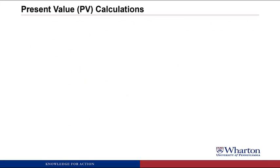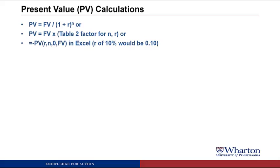Now let's practice doing calculations with this present value formula three ways. First, you can plug numbers into the formula in your calculator. Second, there's a new table — Table 2 — where we can pull factors for number of periods and interest rate, then multiply that times the future value to get the present value. Third, we can use Excel: instead of the FV function, it's going to be the PV function, but otherwise it works much the same.